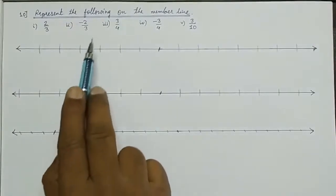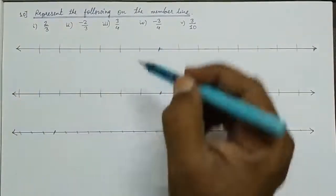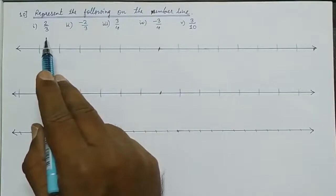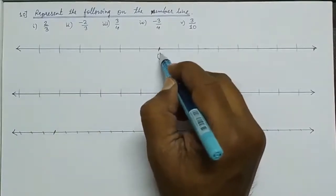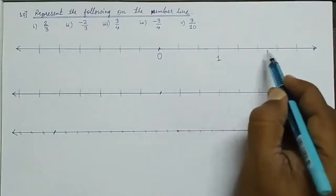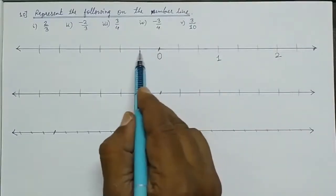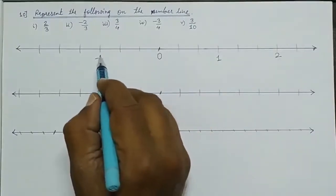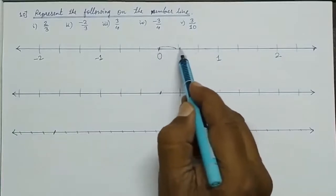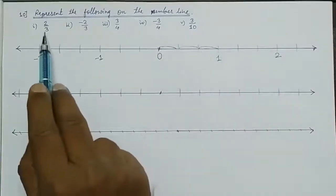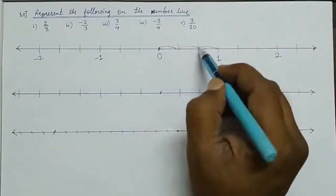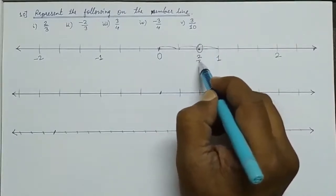Represent the following on the number line. First, 2 upon 3. The denominator says how many equal parts to make of 1 unit. I take 0 and 1, divide the unit into 3 equal parts. From 0 going positive: 1 upon 3, 2 upon 3, 3 upon 3. Similarly on the negative side: minus 1 upon 3, minus 2 upon 3. So 2 upon 3 is here, at the second part from 0 going positive.